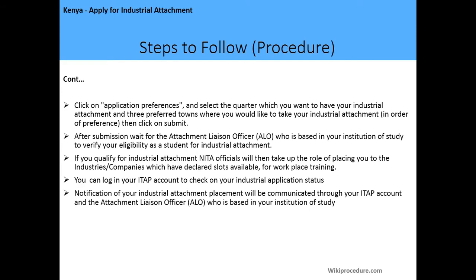Now that you have finished creating your user profile, click on 'Application Preferences' and select the quarter in which you want your industrial attachment. There are usually four quarters: January to April, April to August, August to October, and October to December. The attachment is usually three months. Then select three preferred towns where you would like to take your industrial attachment, in order of preference, and click Submit.